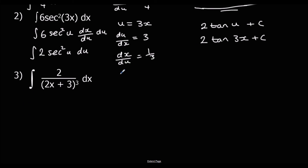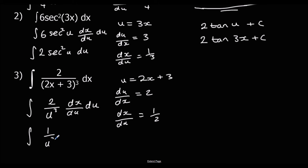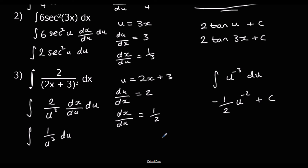Finally the last one — our u is 2x plus 3. That gives us the integral of 2 over u cubed times dx/du with respect to u. du/dx is 2, so dx/du is one half. 2 times one half is 1, so we just have the integral of 1 over u cubed with respect to u. Changing to u to the power of negative 3, we add 1 to the power to get negative 2, and divide by the new power to get negative one half times u to the power of minus 2 plus c, changing u back to 2x plus 3.